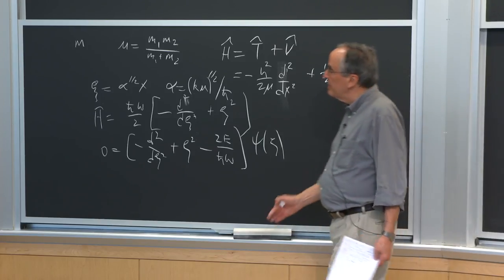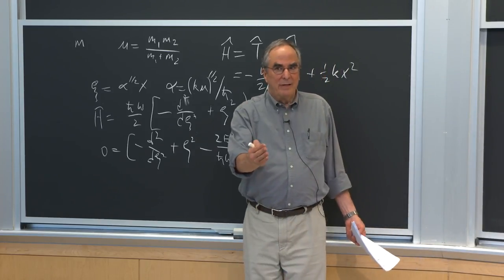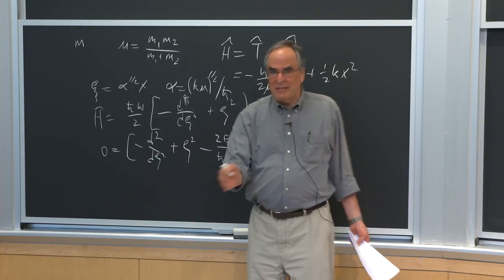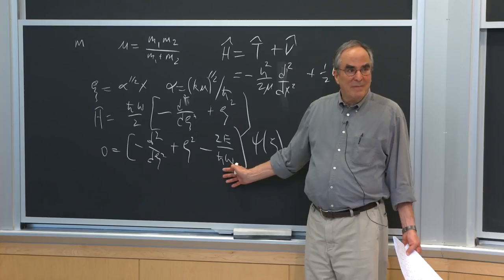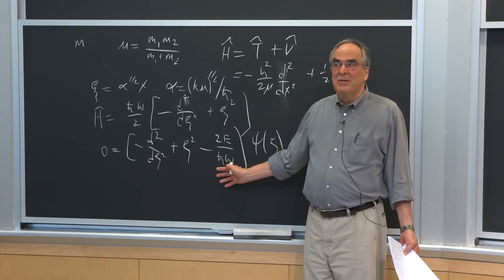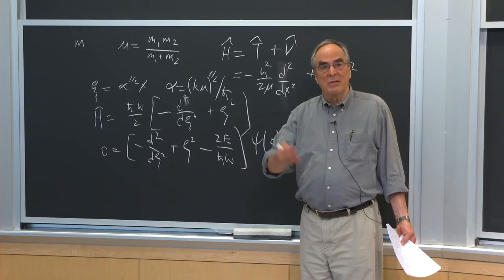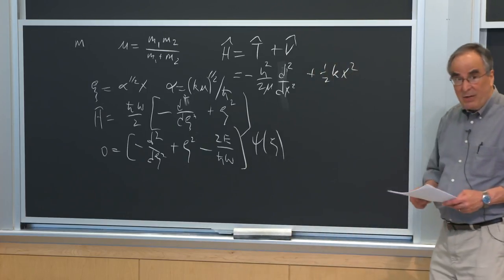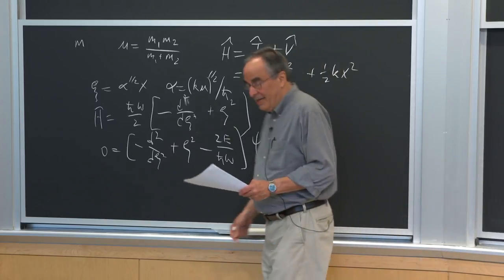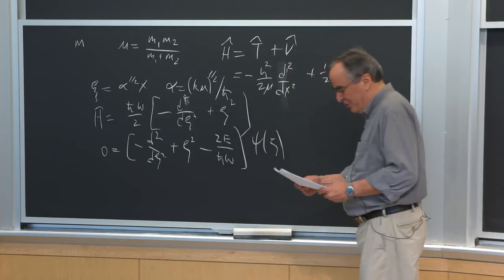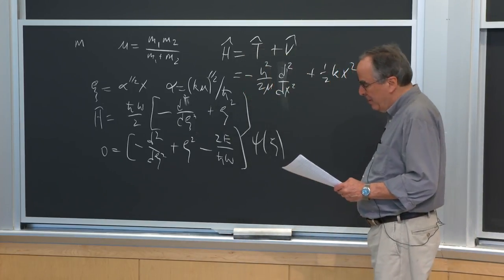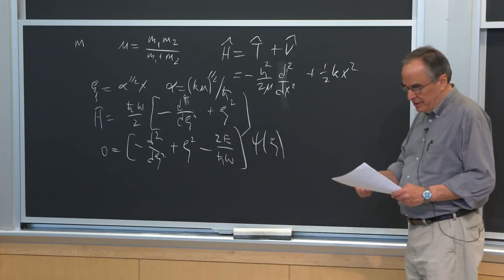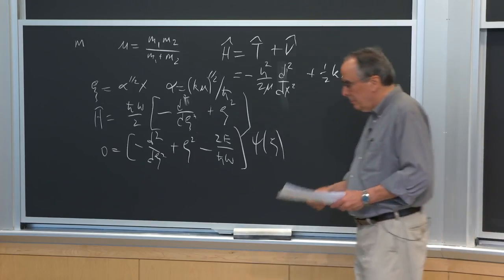The Hamiltonian becomes ℏω times (−d²/dψ² + ψ²) / 2. This is dimensionless. We divide by ℏω to make everything dimensionless and get a differential equation of the form: minus the second derivative with respect to ψ, plus ψ² minus 2E/ℏω, times the wave function expressed as a function of ψ, not x. This is the differential equation we want to solve, but we don't do that in 5.61.